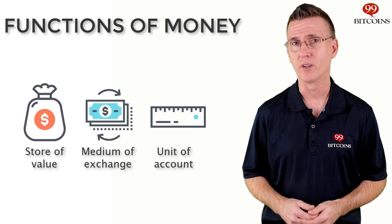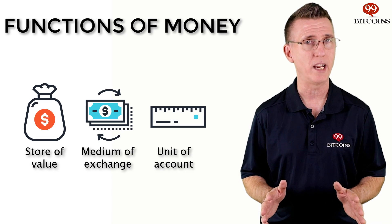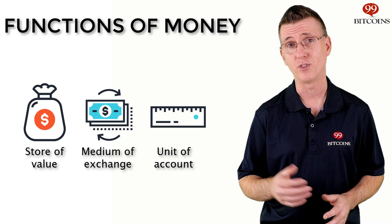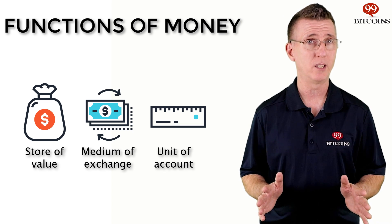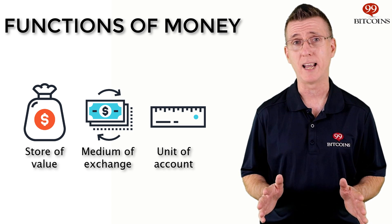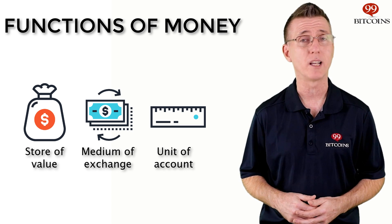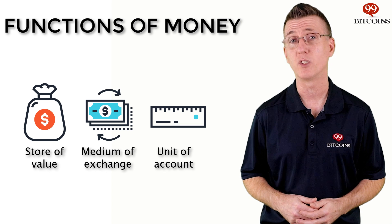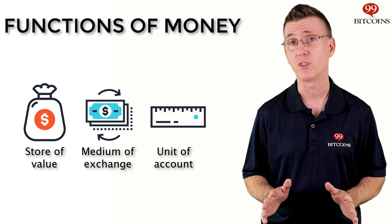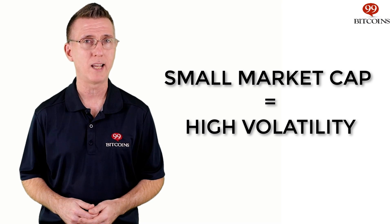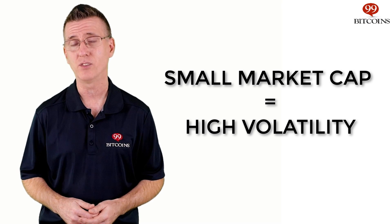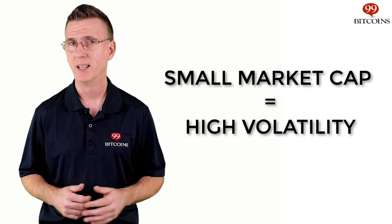Today's topic is stablecoins. Most cryptocurrencies were meant to serve as a medium of exchange and not just a store of value. The problem is that due to their relatively small market cap, even popular cryptocurrencies like Bitcoin tend to experience wide fluctuations in price. Usually, the smaller a market cap an asset has, the more volatile its price will be.